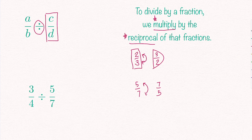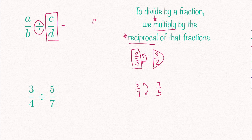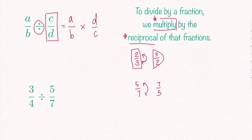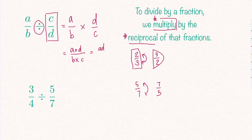Going back to our formula, where we have a over b divided by c over d, I will need to first find the reciprocal of my second fraction. The reciprocal of c over d means they just need to switch places, so it becomes d over c. My first fraction stays the same, a over b, and then I will need to multiply by the reciprocal. So now it looks like a over b times d over c. We multiply numerator by numerator and denominator by denominator, so it's a times d on top and b times c on the bottom — giving us ad over bc.